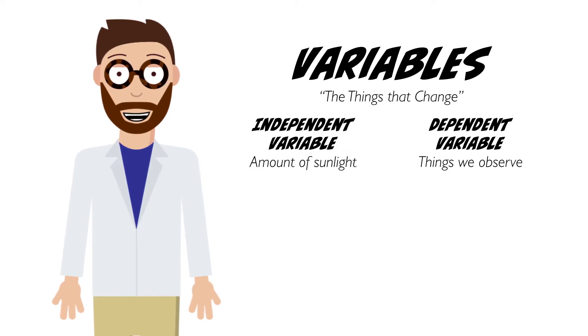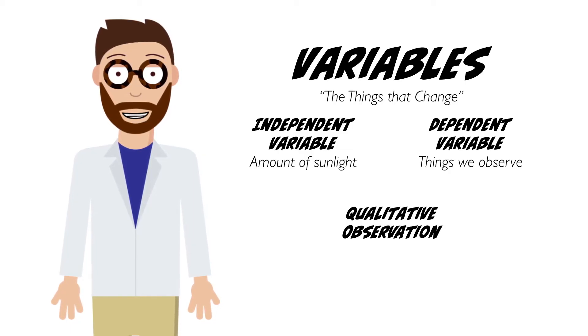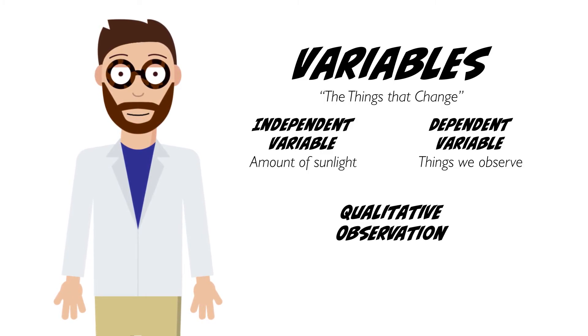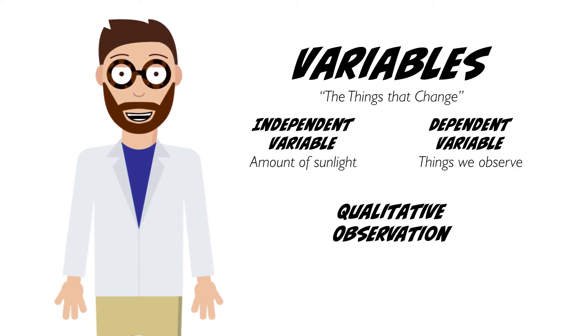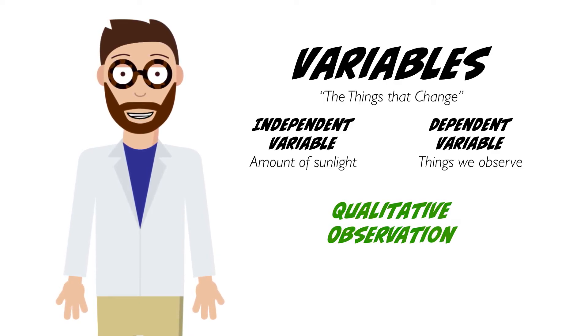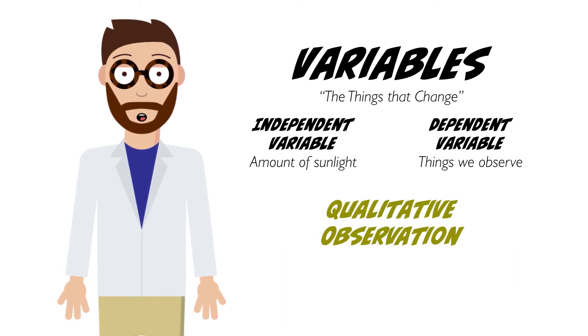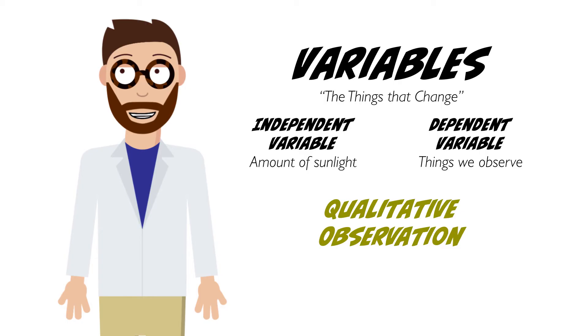We'll make two kinds of observations today. The first is a qualitative observation. These are collected using your senses, and involve descriptions. In our example, we might say that the leaves of a plant are a deep green, or maybe they've turned a pale yellow. We might say that the leaves feel stronger or weaker, or that the stem appears to be stronger.